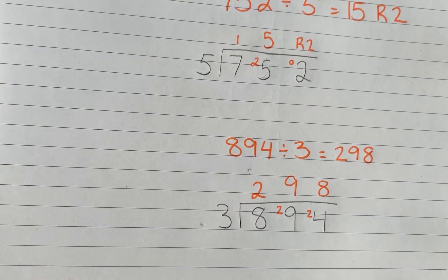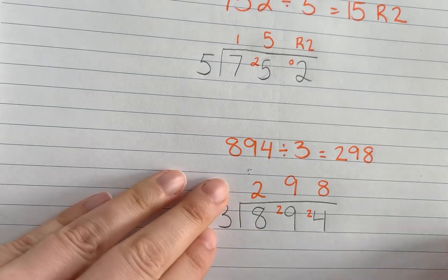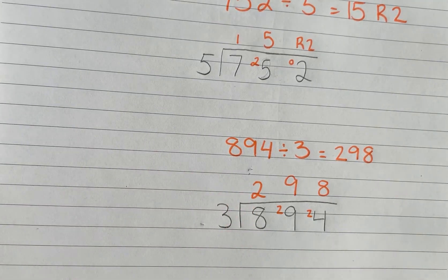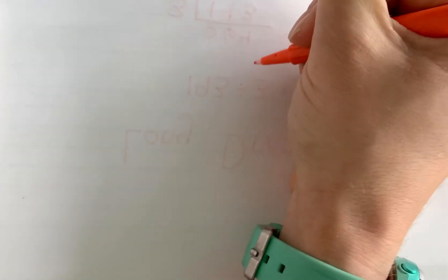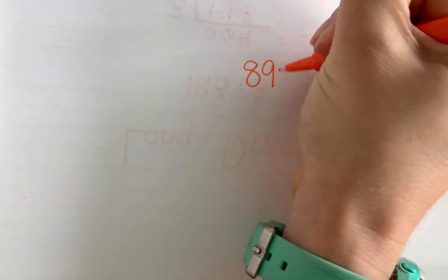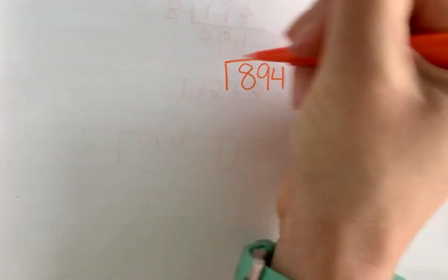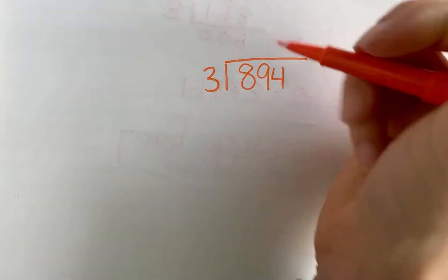We can check that with long division and make sure it works there too. So let's do that. Let's do a side-by-side check. Okay, what was that? That was 894 divided by 3. So 894 divided by 3. Just to make sure.